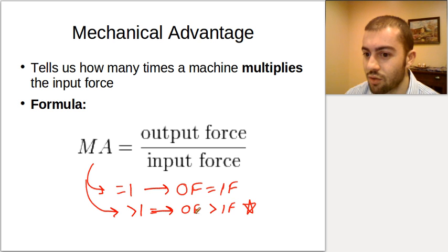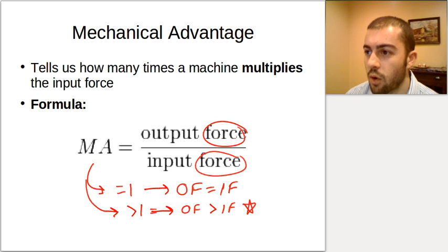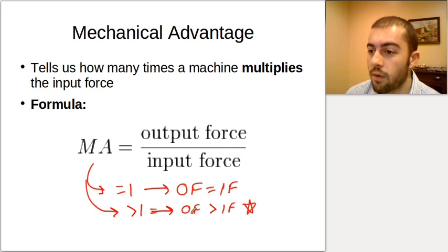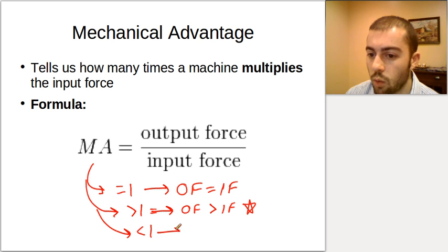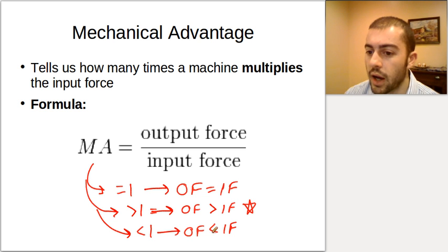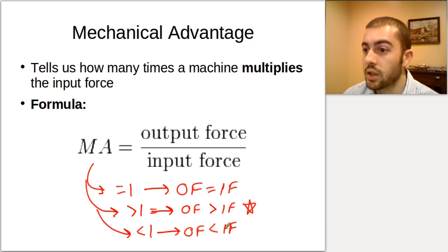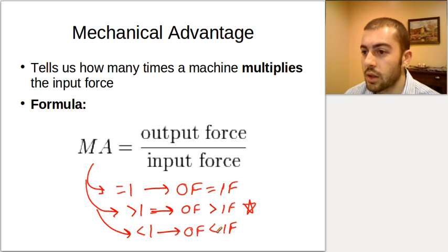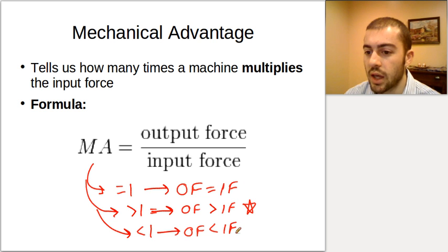You cannot have work that's greater than what you put into a machine. But with mechanical advantage, we're talking about force — we're getting more force out of the machine than we put in. If the mechanical advantage is less than 1, the output force is less than the input force, meaning we're not getting as much force out. We could have the machine change the direction of the force, or maybe it changes the distance over which the force acts. All three cases are possibilities for different values of mechanical advantage.